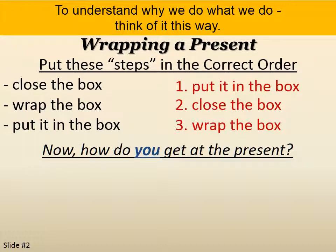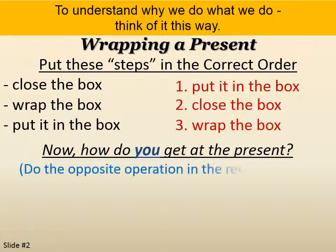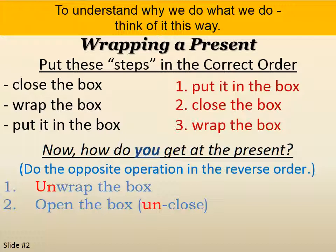Now, if somebody gave you a present, how do you get at the present? You have to do the opposite operation in the reverse order. So the last thing they did was wrap it, so we have to first unwrap it. Then we have to open the box or unclose. And then finally we get to take it out of the box or unput it in. So we're doing the opposite operation that they did in the reverse order.